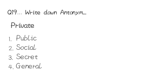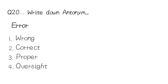Question number 19: you have to write the antonym of 'private.' Options are: public, social, secret, or general. The correct answer is public — private and public. This is the last question: you have to write the antonym of 'error.' Is it wrong, correct, proper, or oversight? The opposite of error is correct.